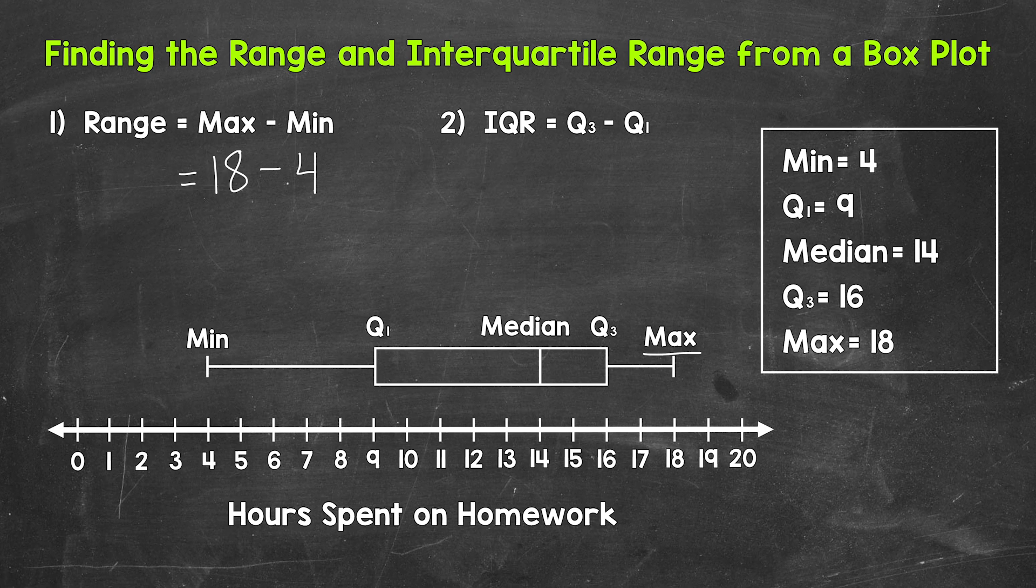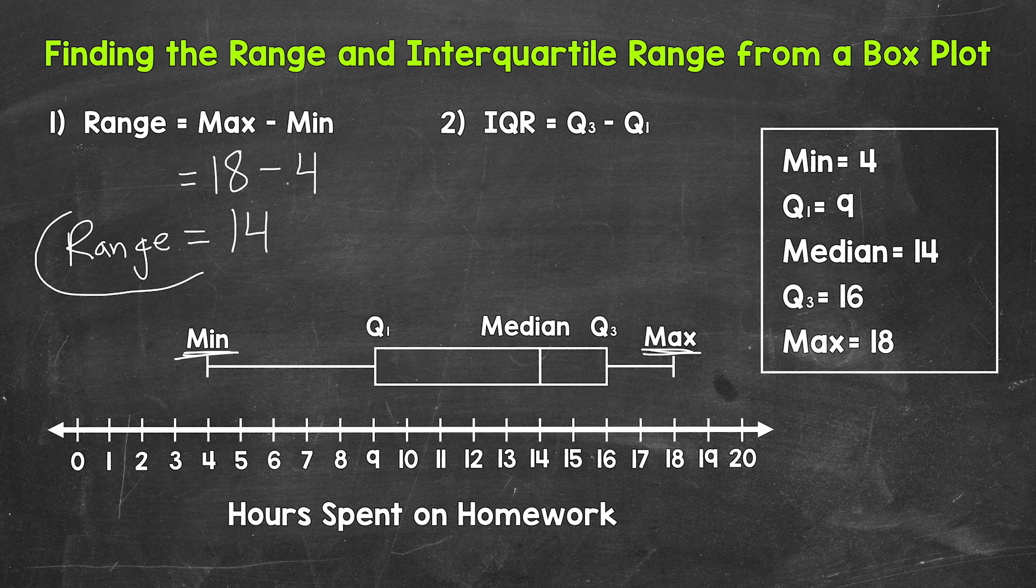The maximum, 18, is right here. The minimum, 4, is right here. 18 minus 4 gives us a range of 14. So the range equals 14. So that's the total spread of the data, the difference between the highest and lowest values.